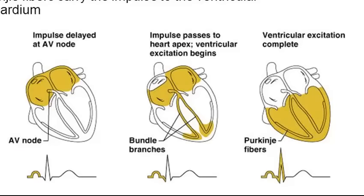To summarize: it all begins with the SA node generating the impulse, excitation begins, transfers to the AV node, moves through the bundle branches, reaches the Purkinje fibers, and the Purkinje fibers finally give that to the contractile cells, which provide the mechanical process of beating.